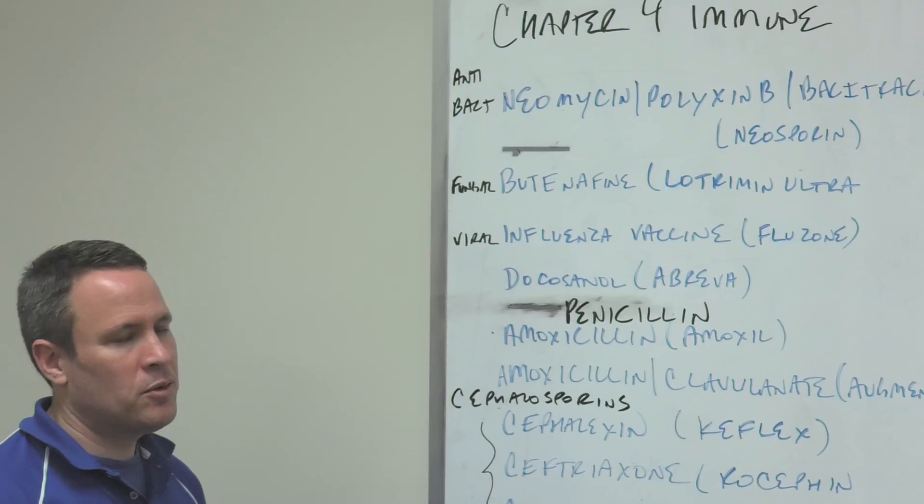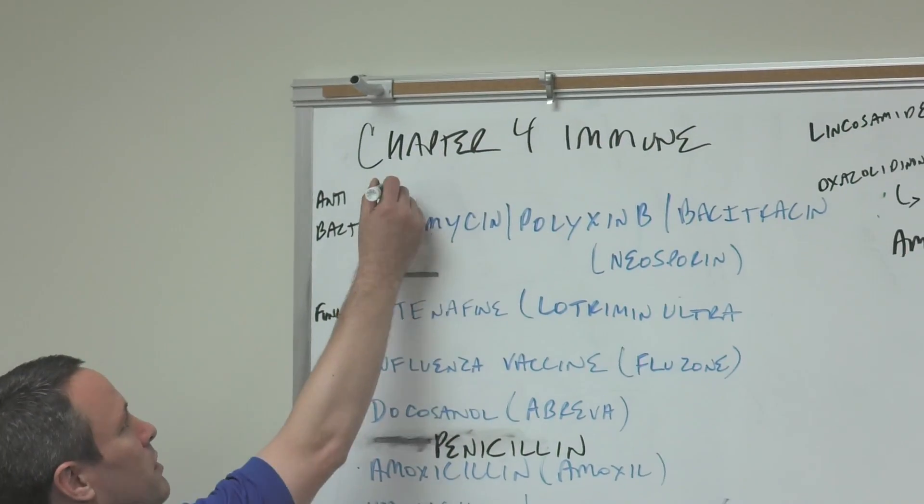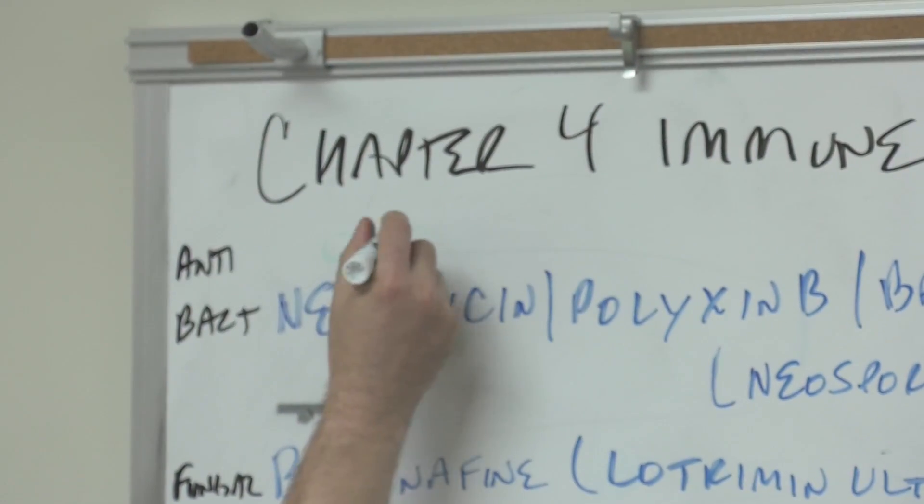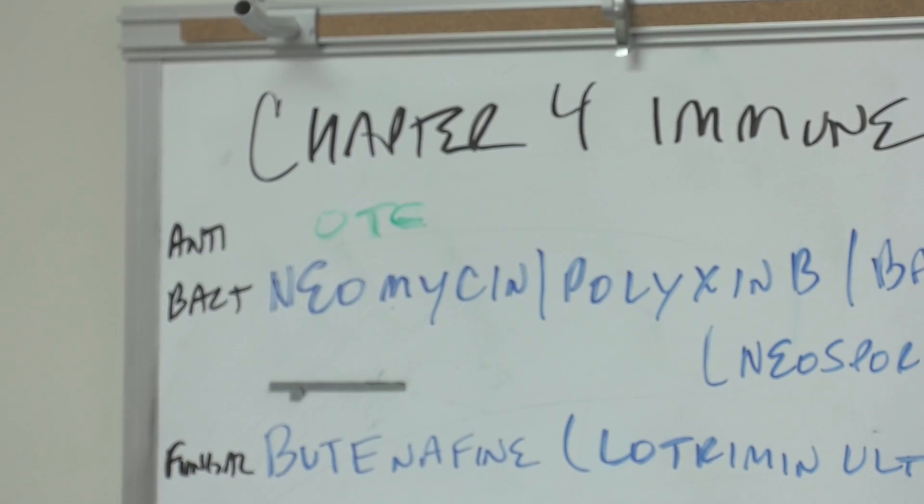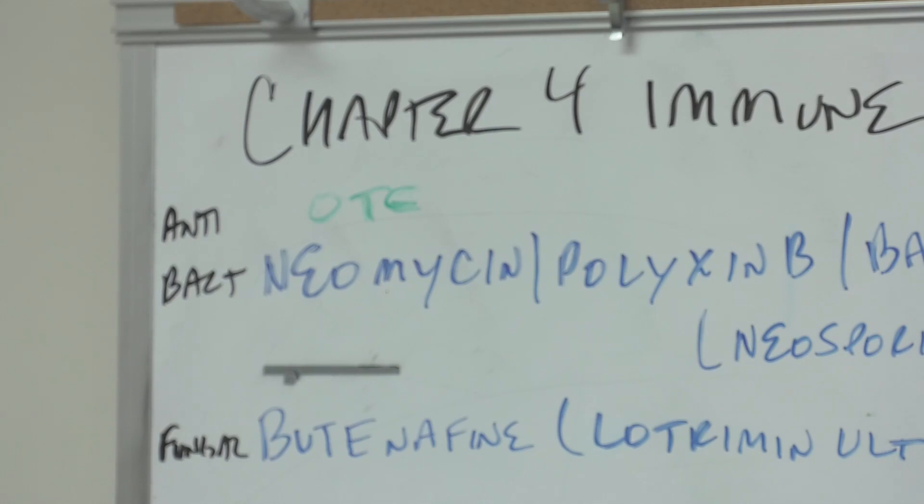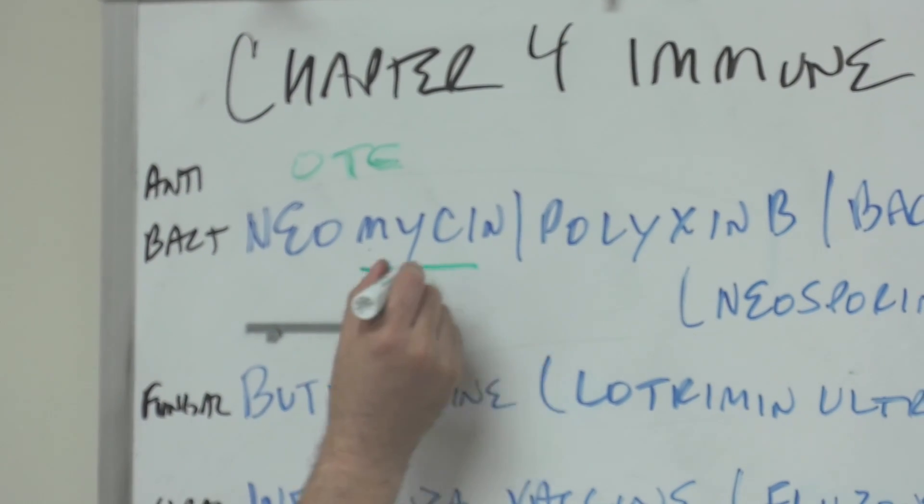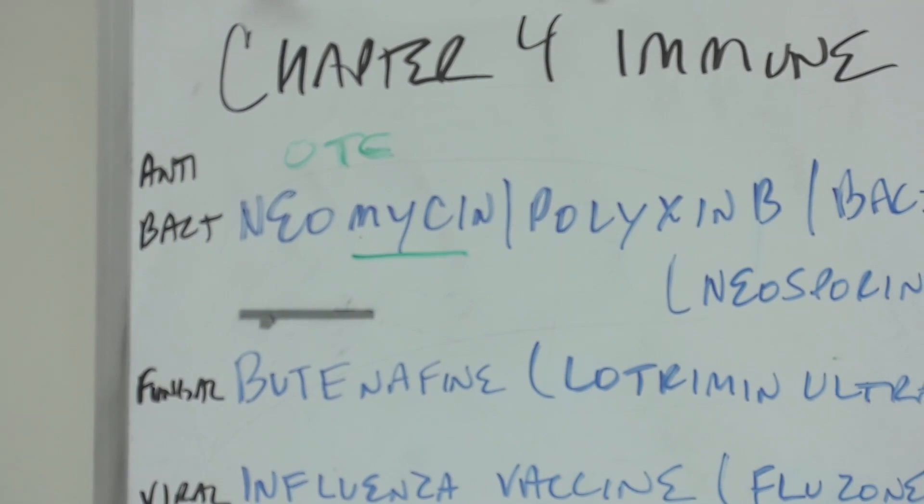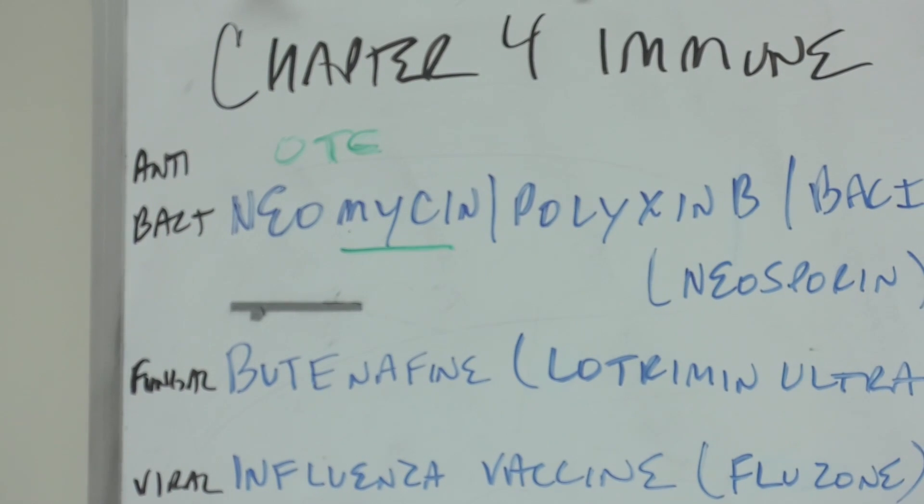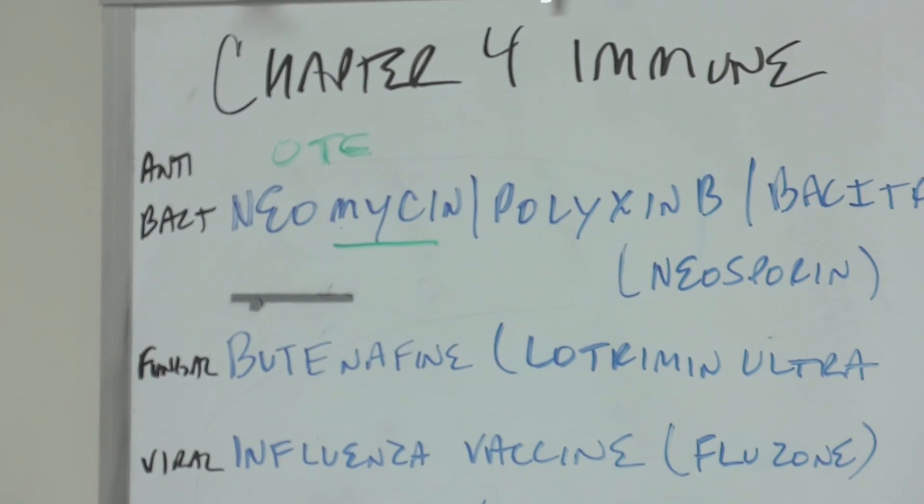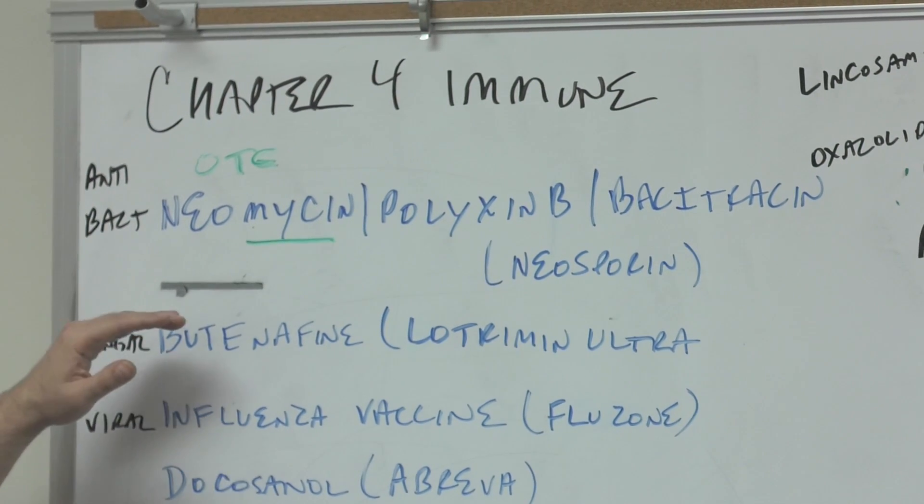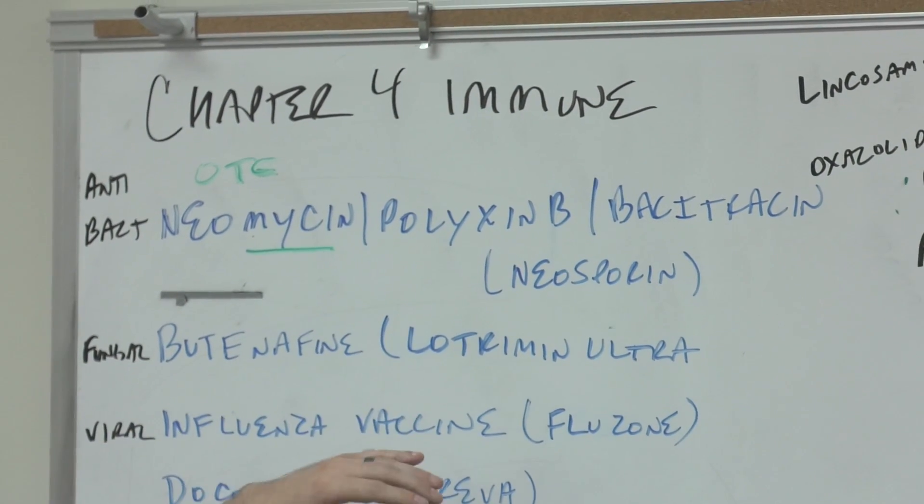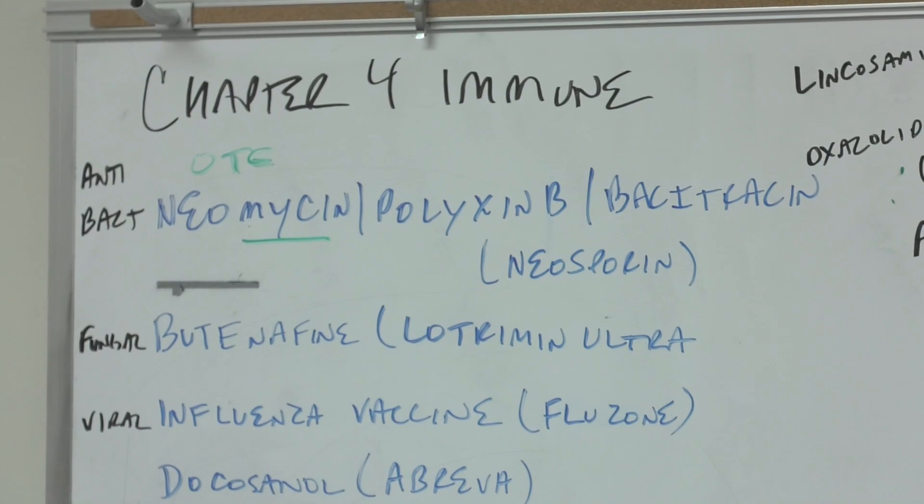The first thing I want to do is start with four OTC medications: neomycin, polymyxin B, and bacitracin. This mycin stem you may have seen before means that it's from the streptomyces bacteria, but doesn't necessarily tell you it's an antibacterial. Neomycin, polymyxin B, bacitracin—this is Neosporin.